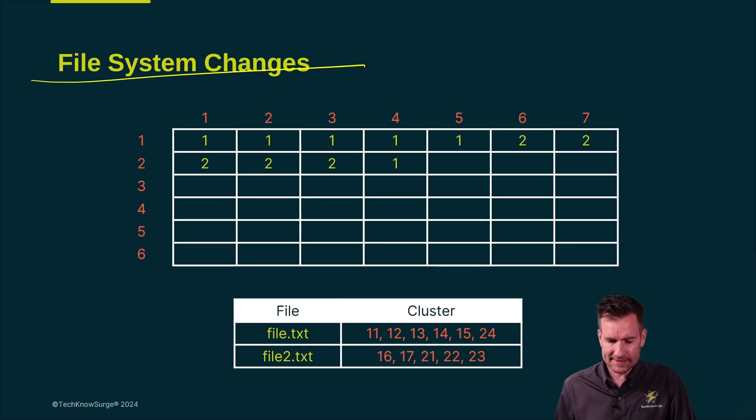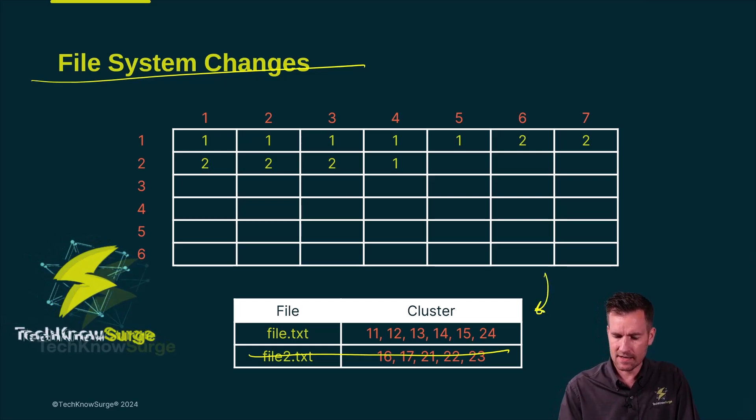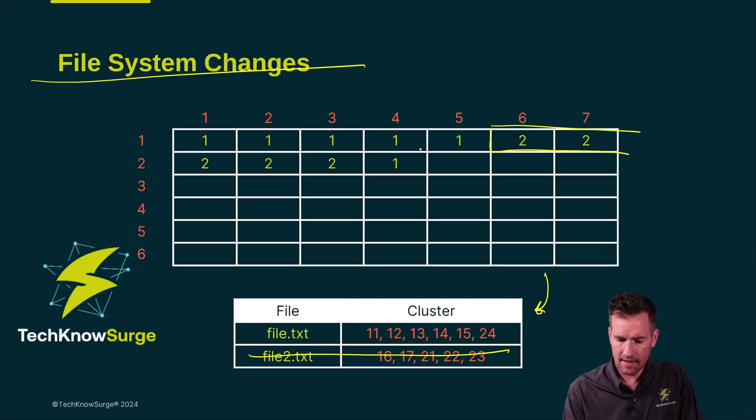As an example, let's say we delete file two from the system. It deletes it from the file allocation table but it also needs to go and mark inside the actual data as now it can be written over. Now we don't need this data anymore, so there's some multiple steps that need to happen here.